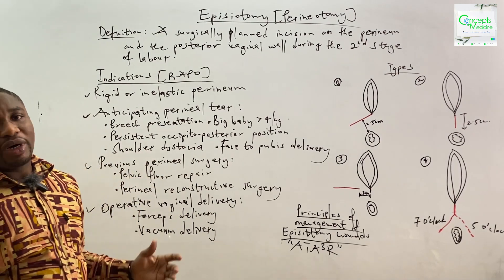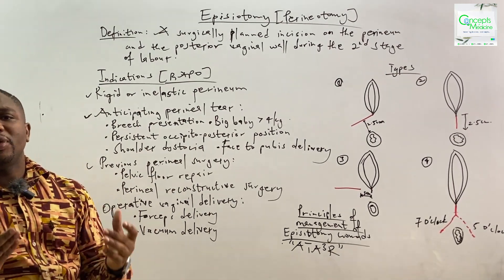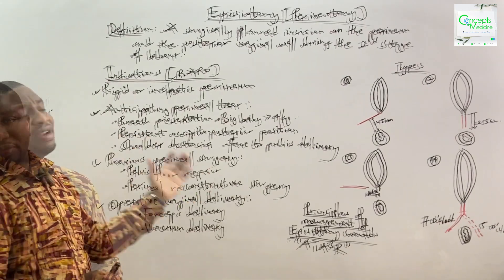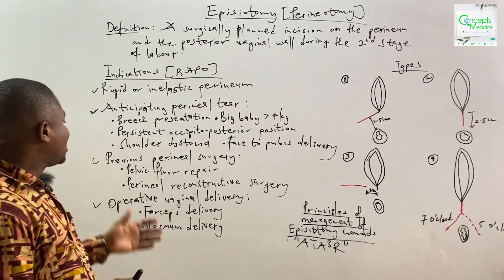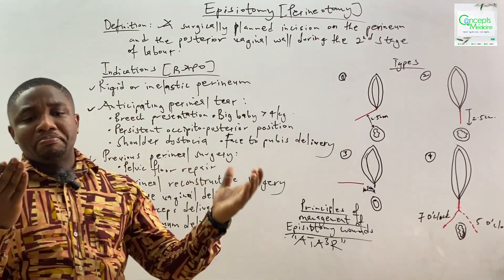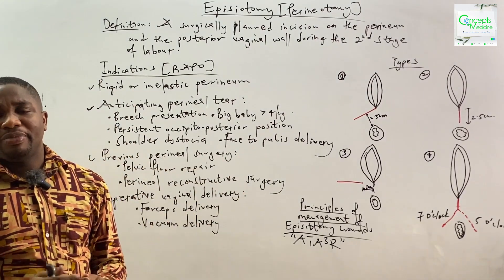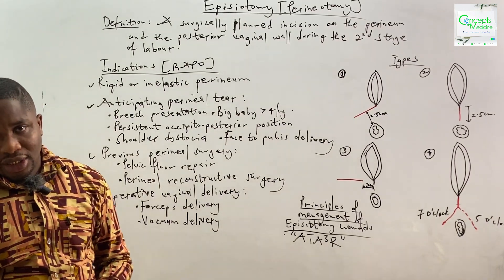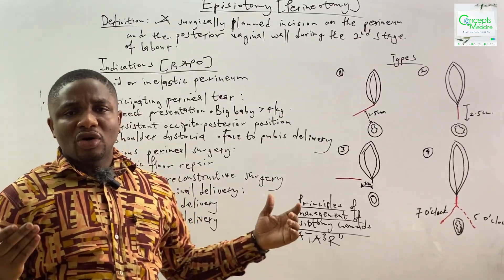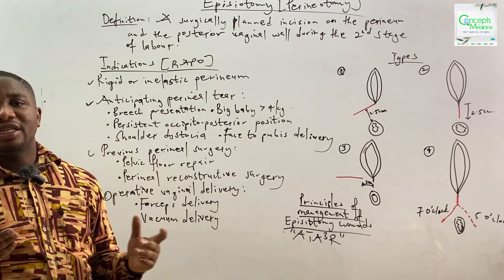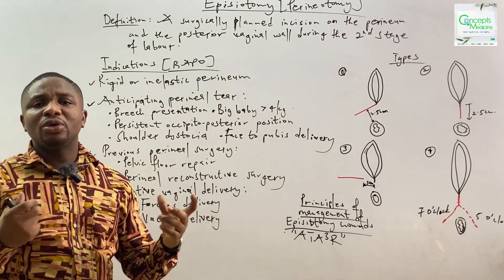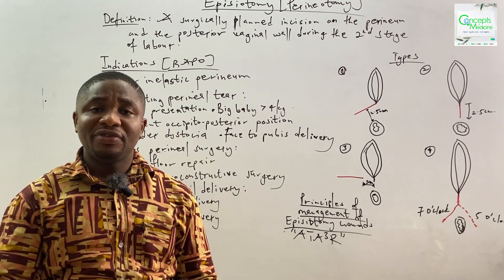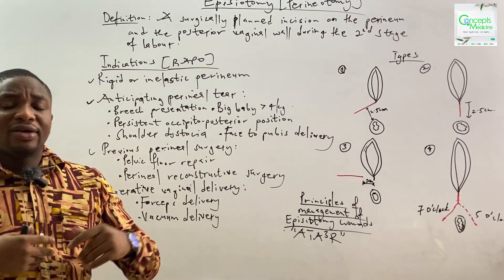The next indication is P — previous perineal surgery, which includes pelvic floor repair and also perineal reconstructive surgery. And finally, T — operative vaginal delivery, which includes forceps delivery and vacuum delivery. Operative vaginal delivery can also be referred to as instrumental delivery.